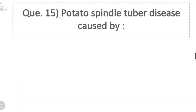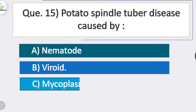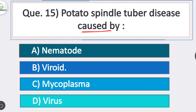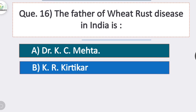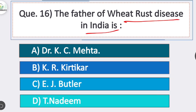Question 15: potato spindle tuber disease is caused by? Option B is correct — viroid. Question 16: the father of wheat rust disease in India is? Option A is correct — Dr. K.C. Mehta. K.C. Mehta discovered the disease cycle of wheat rust in India.